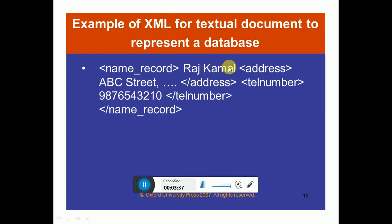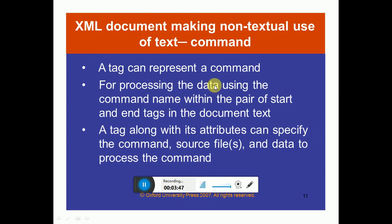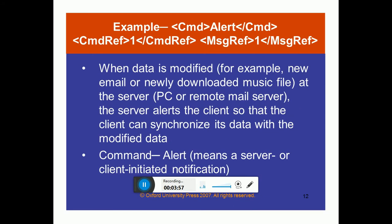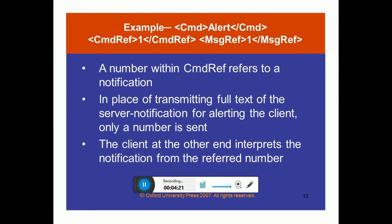The same example: name record Raj Kamal, ABC Street address, telephone number. A tag can also represent a command for processing data, using the command name within a pair of start and end tags. A tag along with its attributes can specify the command, source file, and data to process. For example, when data is modified — such as a new email or a newly downloaded music file — the computer gives a command. The server allows the client to synchronize with the modified data. A command means any alert given by the computer.